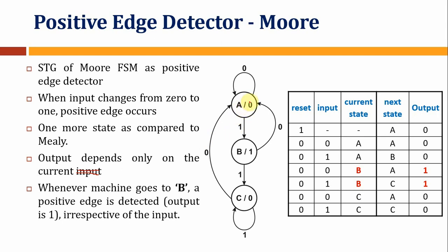This is a Moore machine, where the output depends only on the current state. In a Moore machine we write the output inside the bubble. When the machine is in state A, the output will be 0. When the current state is state B, the output will be 1.